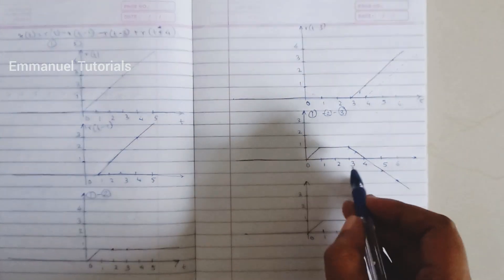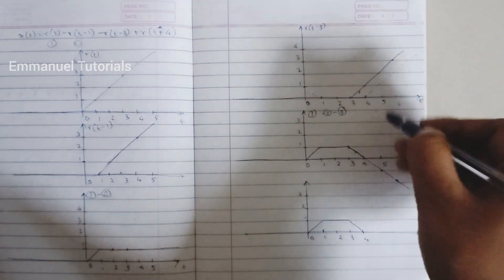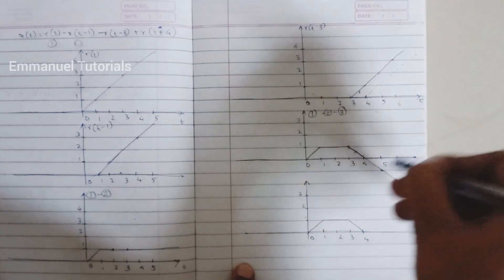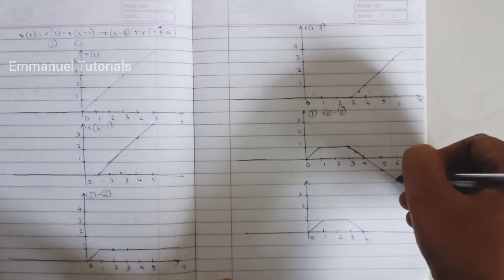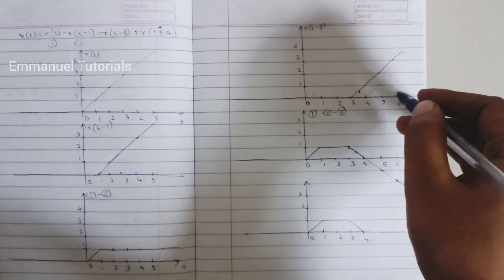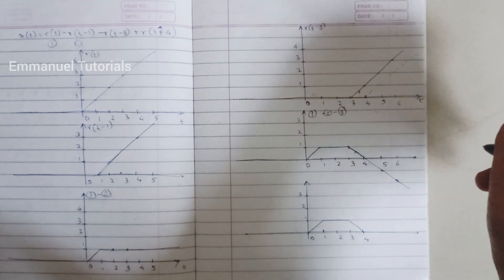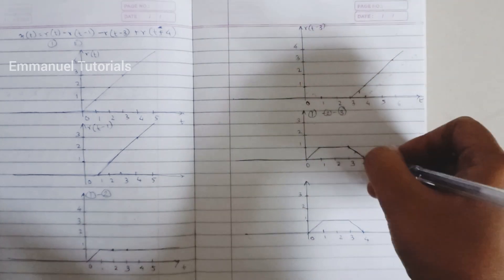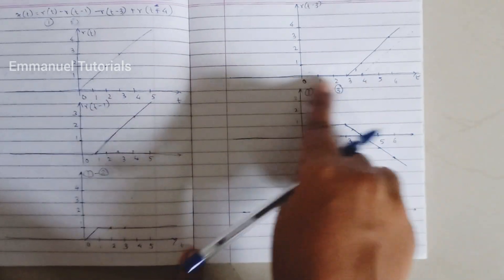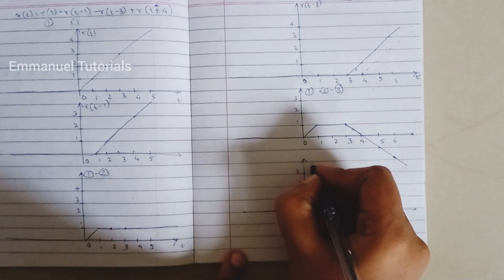We add r(t-4) to the signal obtained by subtracting the previous three ramps. At t=4, both signals have amplitude 0. At t=5, the first signal's amplitude is -1 and the second signal's amplitude is +1 — when added, they cancel to 0. This cancellation continues, so from t=4 to infinity our result is 0. From 0 to 4, the second signal is 0, so we draw the first signal as it is.